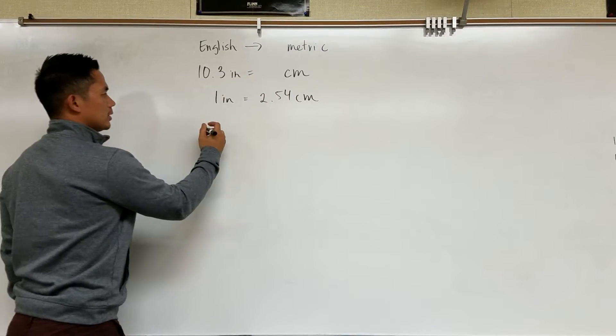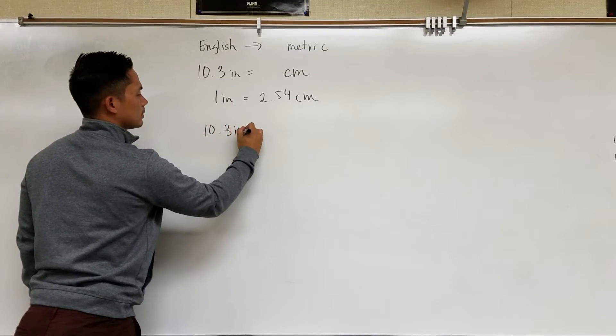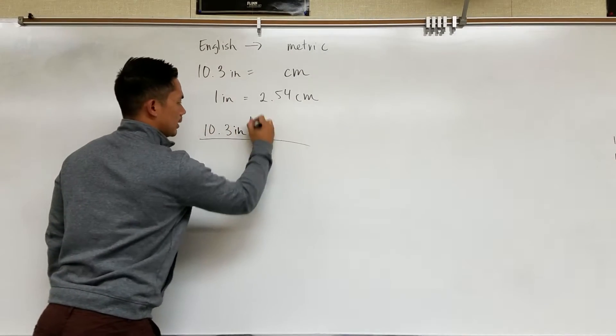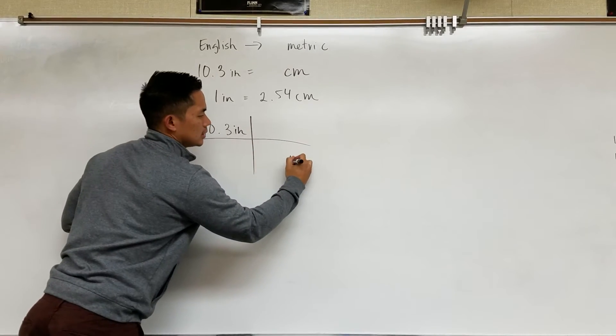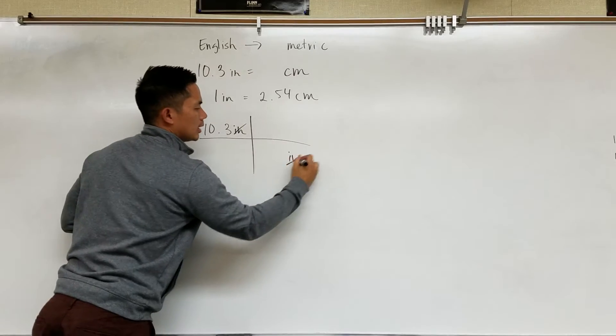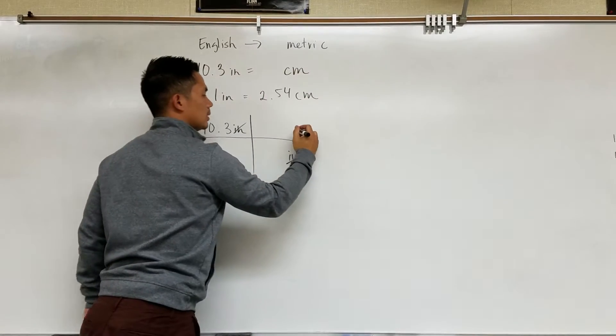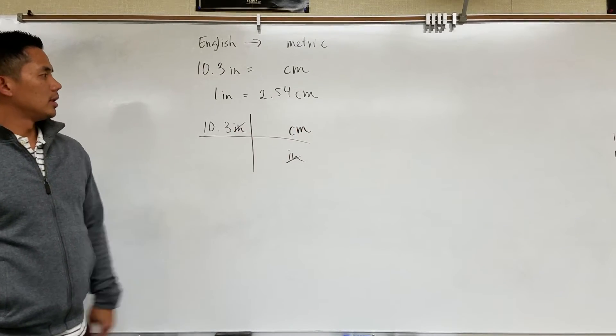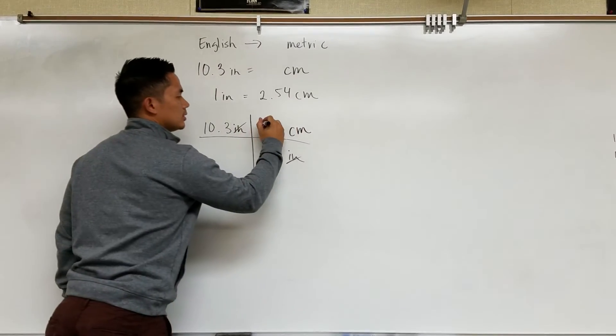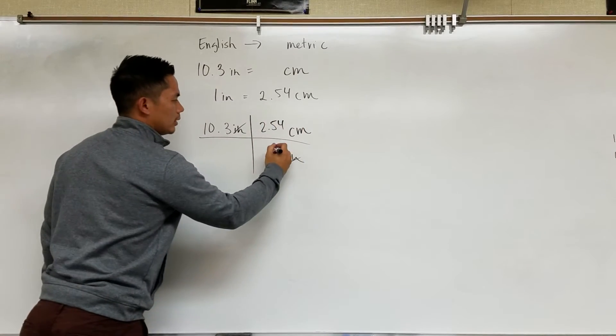So first, I'm going to take 10.3 inches and I am going to divide by inches because that's how we're going to get the units to cancel to centimeters because that's our end goal. Now we said that the conversion factor is 2.54 centimeters for every one inch.